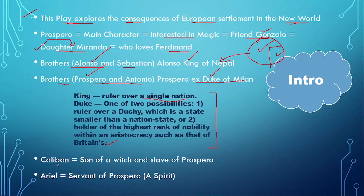Now let's see the character of Caliban. He is the son of a witch and the slave of Prospero. We will also know how Caliban came to serve Prospero. Next, let's see the Ariel character. Ariel is also a servant of Prospero and is basically a spirit. We don't know Ariel's appearance — whether like wind or water. We don't know, but we know it is a spirit.